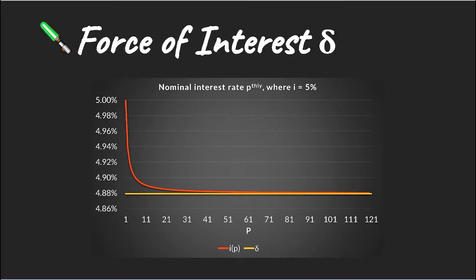Now, if we plug in values for P into i^(P) and get progressively bigger, we will see that our value for i^(P) starts to converge to our delta.